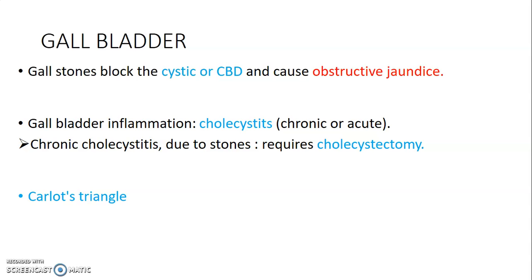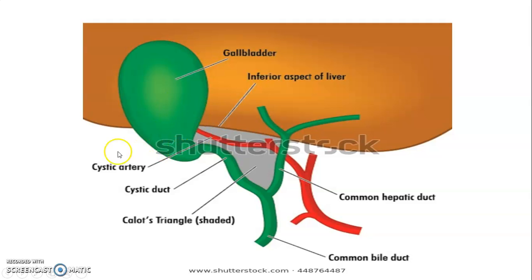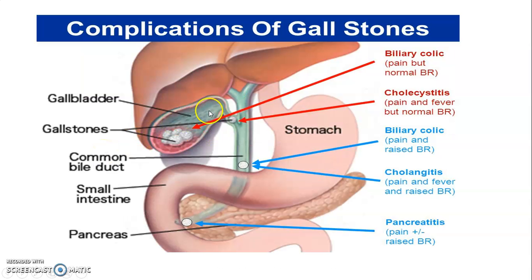Calot's triangle is of surgical importance. It is formed by the inferior aspect of the liver, the common hepatic duct, and the cystic duct. This triangle is the site to locate the cystic artery — you need to ligate the artery before performing gallbladder surgery to avoid bleeding. Gallstones lodged in the cystic duct or common bile duct lead to obstructive jaundice, and obstruction of the ampulla of Vater can affect drainage of bile and also the exocrine pancreas through the pancreatic duct.